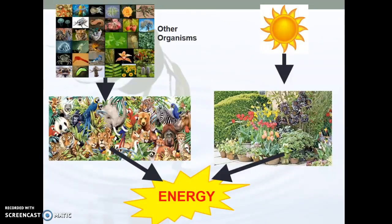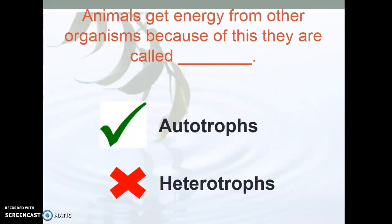They both need ATP. ATP is the usable energy for the cell. They both need glucose to obtain energy. So let's check our understanding. Animals get energy from other organisms because they are called A, autotrophs, or B, heterotrophs. What do you think?